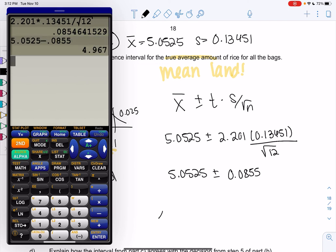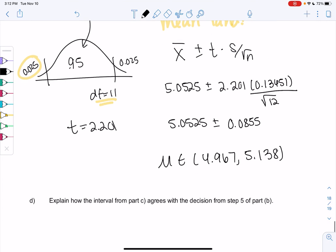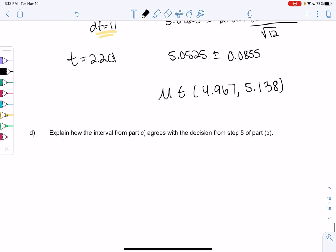I'm trying to make decimal places match, which is why I went out to 4. We'll just subtract. I like to subtract first. We're in mean land, so μ is in the interval 4.967 up to 5.138. We're confident. We don't know the actual average, but we know the average is somewhere in between 4.967 and 5.138. Any number in between here is a reasonable possibility.